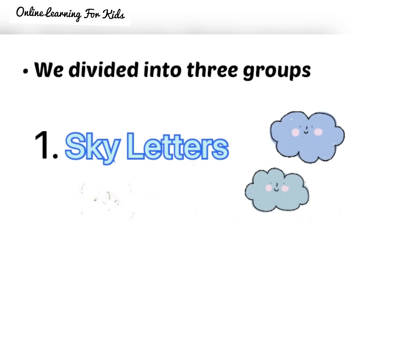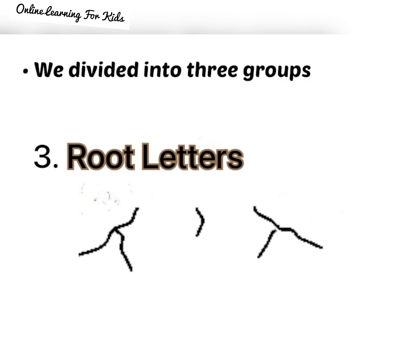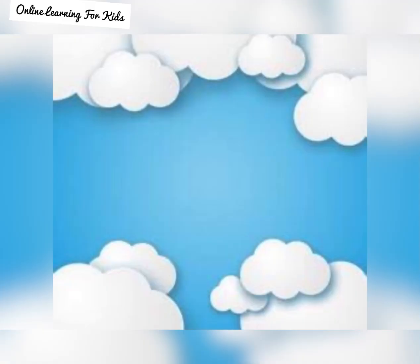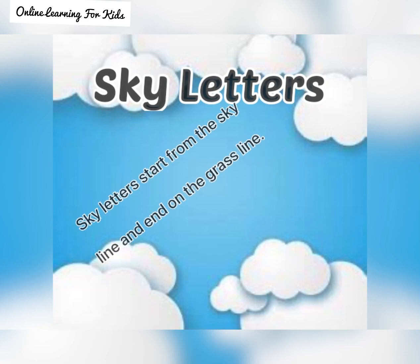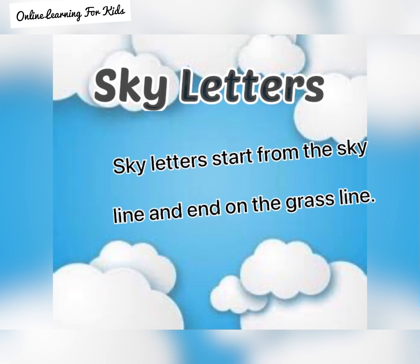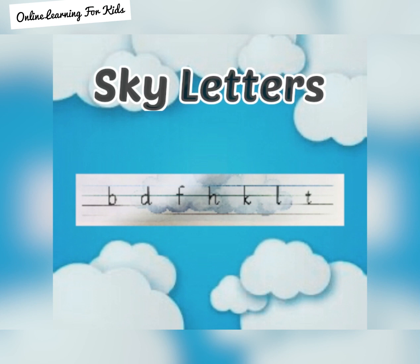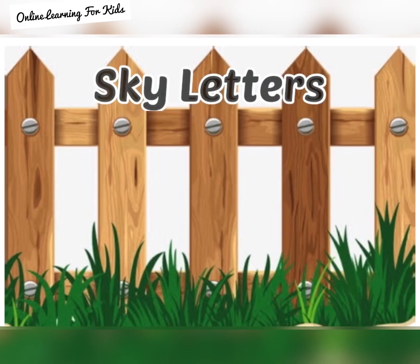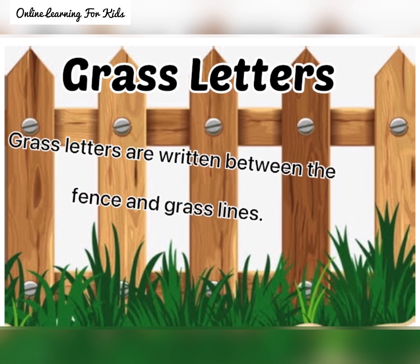Now let's move on to the first group: sky letters. Sky letters start from the sky line and end on the grass line. There are seven sky letters: b, d, f, h, k, l, and t.